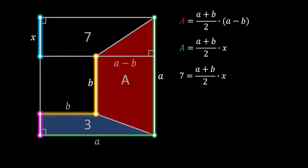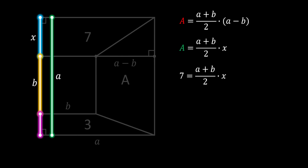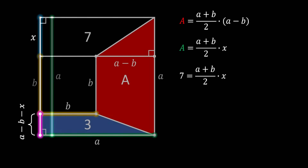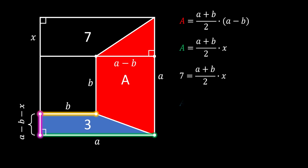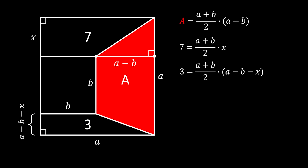We can do this by clearing up our image and rearranging the lines. You can see that this small segment equals the side of the big square minus the side of the small square minus the height of the top trapezium. So this blue area equals (a + b) / 2 times (a − b − x), and since we know this area equals 3, we substitute that value.